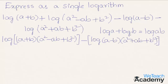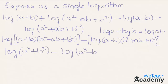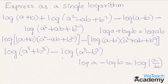Here minus is taken as common, and we get log(a−b) plus log(a²+ab+b²), so we can write minus of log[(a−b)(a²+ab+b²)]. Now (a+b)(a²−ab+b²) is in the form of a³+b³, and (a−b)(a²+ab+b²) equals a³−b³. So we can write log(a³+b³) minus log(a³−b³), which is in the form of log a minus log b, equal to log(a/b). Therefore the answer is log[(a³+b³)/(a³−b³)].